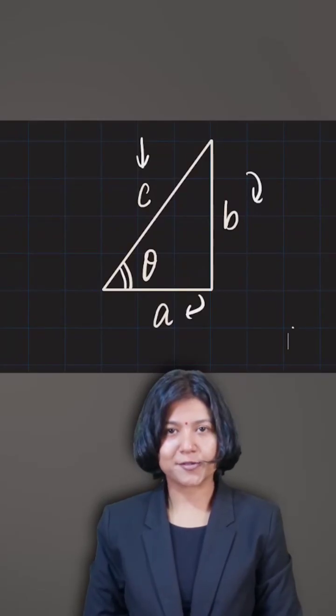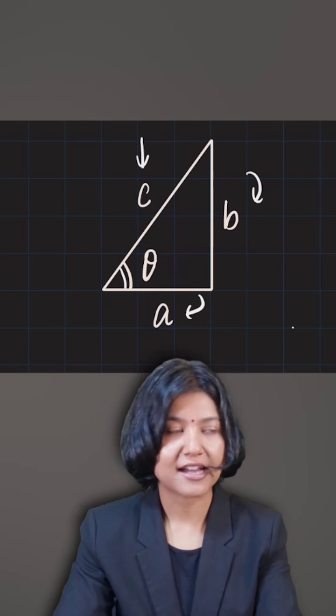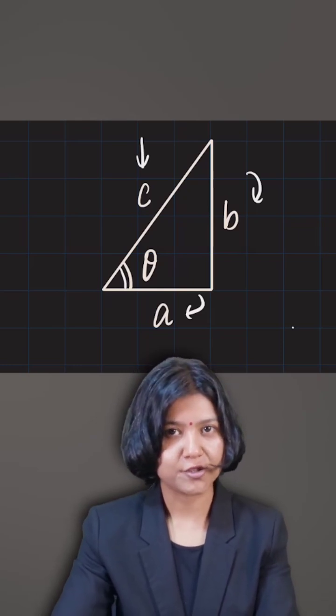Trigonometry started from Pythagoras theorem. The Pythagoras theorem tells us that the square of the largest side is always equal to the sum of the square of the other two sides.